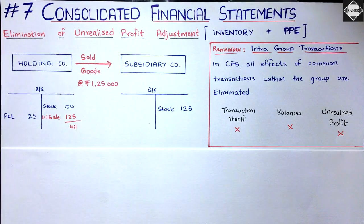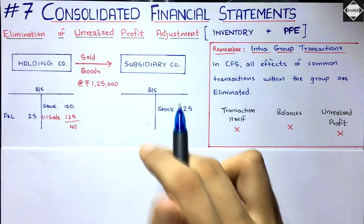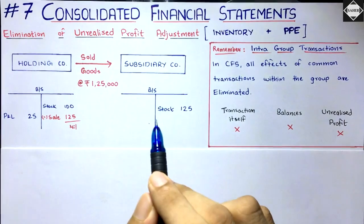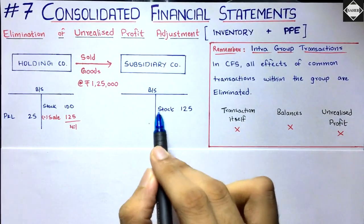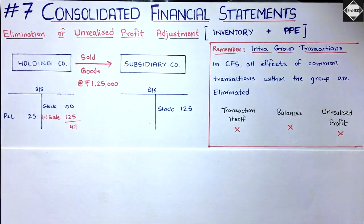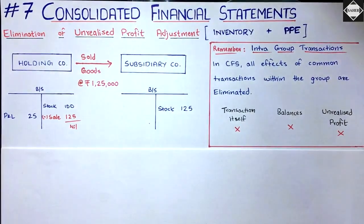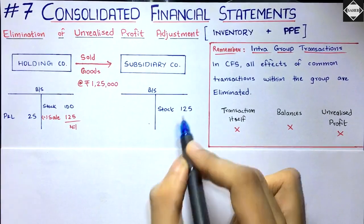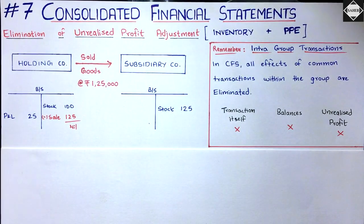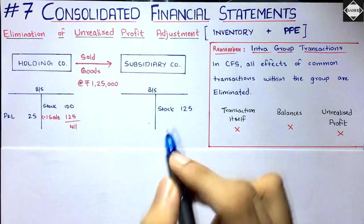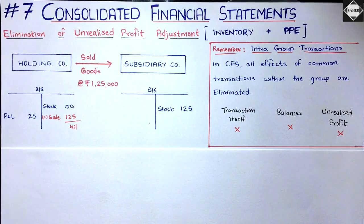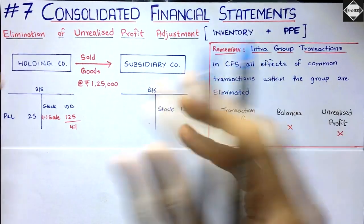In the subsidiary company's financial statement, a purchase will be recorded and in the balance sheet they will recognize the inventory at one lakh twenty-five thousand. In this one lakh twenty-five thousand, there is one lakh of cost and twenty-five thousand of profit. For the subsidiary company, the cost is one lakh twenty-five thousand — they record it at one lakh twenty-five as per IAS 2: lower of cost or NRV.